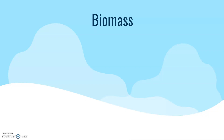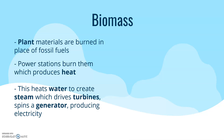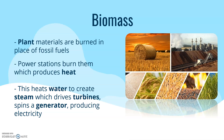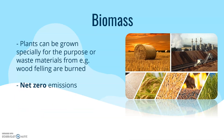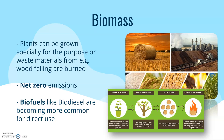Biomass is where plant materials are burned in place of fossil fuels. Power stations burn them to produce heat, heat water, produce steam, drive a turbine, and spin a generator. Plants can be grown specifically for this purpose, or waste materials from wood felling are burned instead. The idea is net zero emissions — plants take in CO2 as they grow, then release it when burned, so it's taking in as much as it gives out.